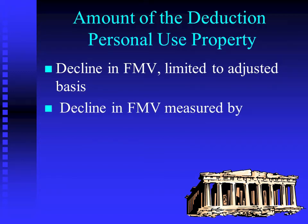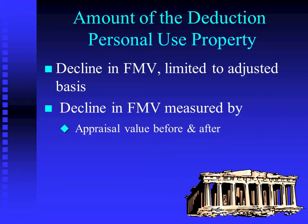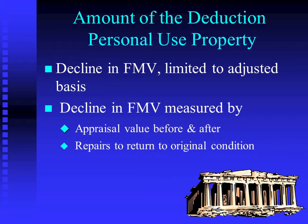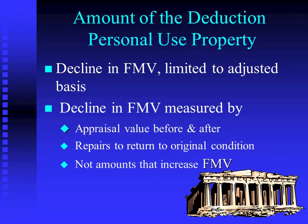The decline in fair market value can be measured several ways. One is to get an appraisal before and after — and yes, there may only be ashes for the appraiser to work with after, but they're very clever about using information to get an approximation. The alternative is the repairs it takes to return to the original condition. You can't add a new fancy slate roof and an extra bedroom — you can only count what it would have cost you to restore the property to its original condition.